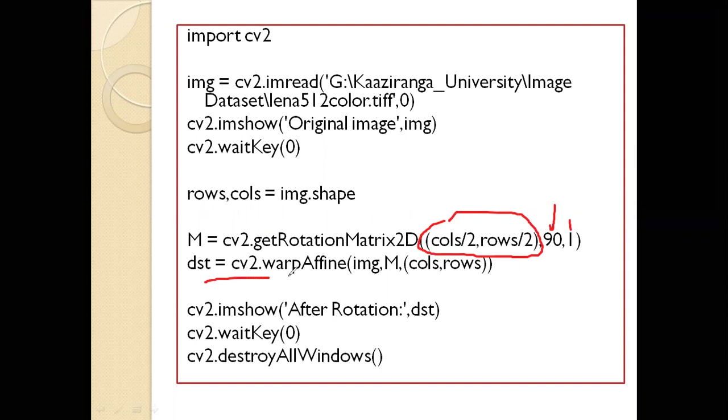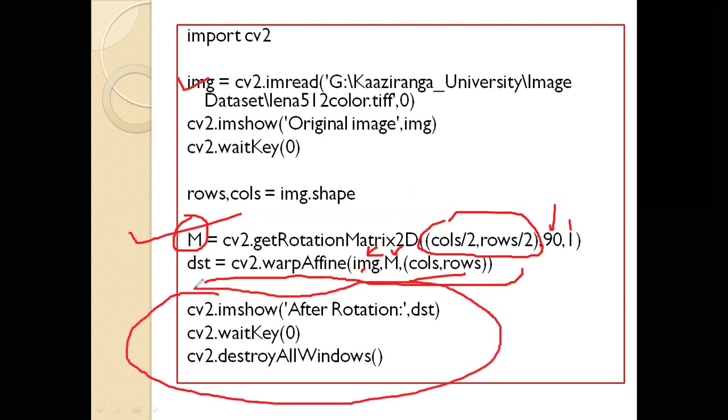Then dst equals cv2.warpAffine. I told you that you don't need to remember all the parameters. The important ones are: the image, M which is the transformation matrix, and cols and rows. The syntax is done. Now we're ready to display the image after rotation with cv2.imshow, and you know about cv2.waitKey and cv2.destroyAllWindows.